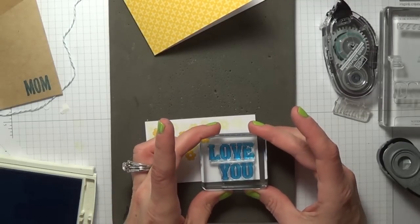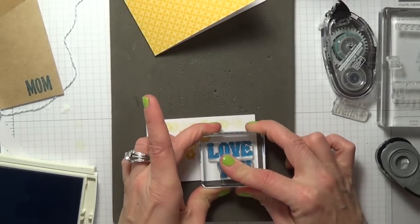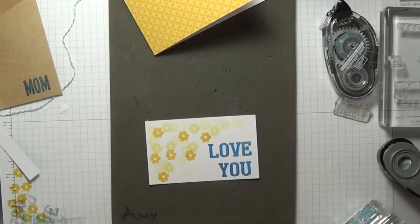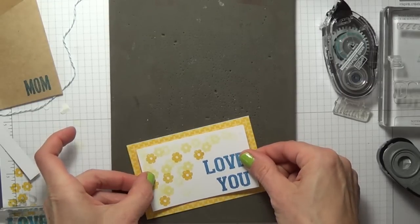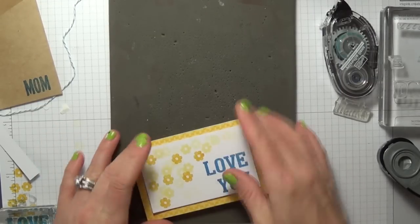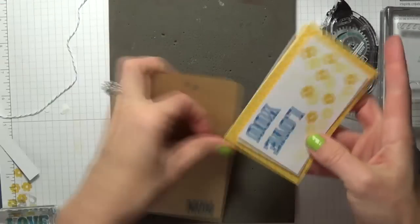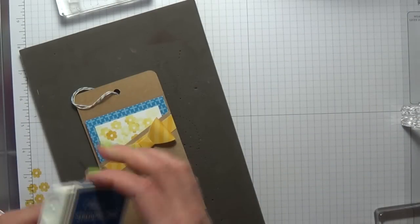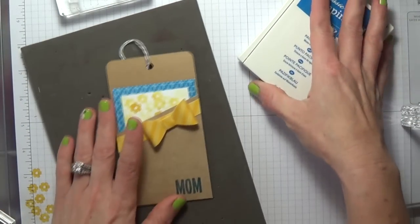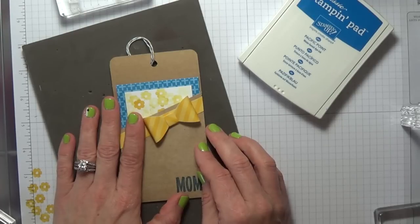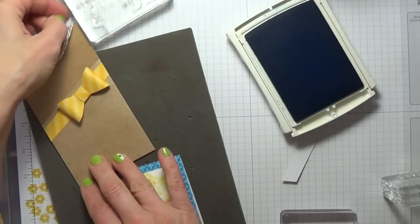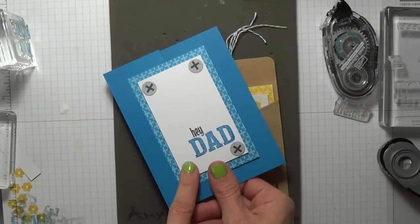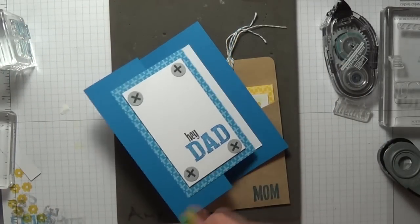I'm going to stamp this love you in my pacific point here on the corner. I'm going to add this on here with dimensionals and that will tuck inside my pocket here. Thank you so much for joining me. Make sure to stop over at my blog to see lots of other alternate paper pumpkin ideas and a PDF that you can print off with the measurements for this card. Have a great day. Bye.